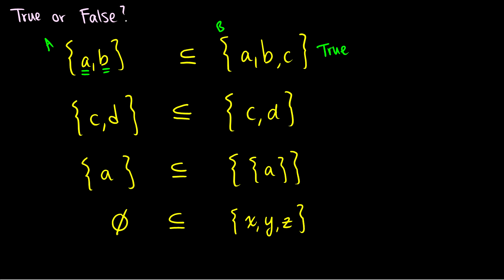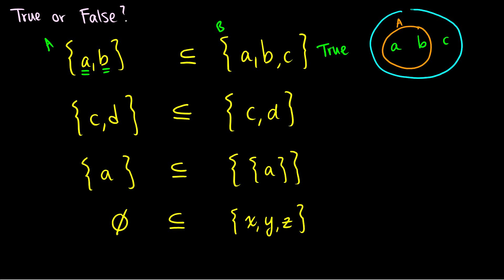We can also draw this visually. We place A and B together and circle them — that's our set A. Then we circle A, B, and C together — that's our set B. We can see that A is contained within B, therefore A is a subset of B. You can verify this visually or just use the definition.